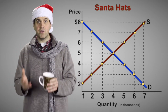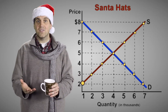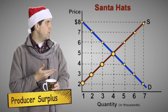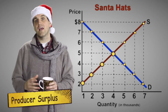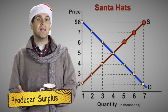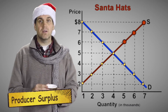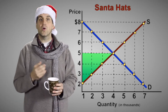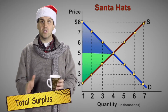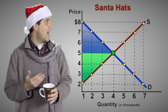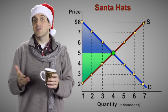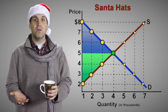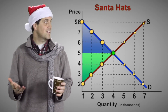The supply curve shows there's a producer with a super low opportunity cost that's willing to sell hats for $2. Every producer willing to sell hats for less than $5 makes producer surplus — it's the difference between the price and what a seller is willing to sell something for. But what about producers willing to sell hats only if they can make more than $5? Well, they don't make a sale; their costs are just too high. The combined producer surplus is this triangle right here, and so consumer surplus plus producer surplus — total surplus — is right here. Markets are extremely efficient at allocating resources: the people who want Santa hats the most get them, and they're made by producers with the lowest possible costs.